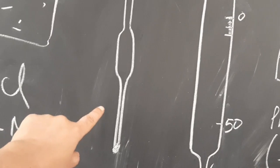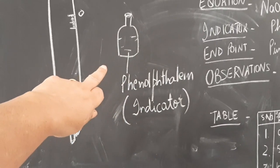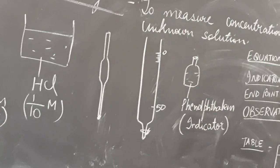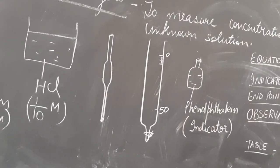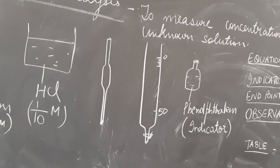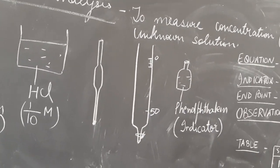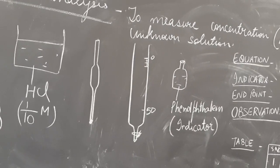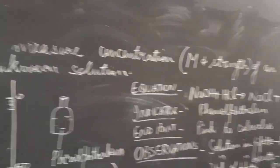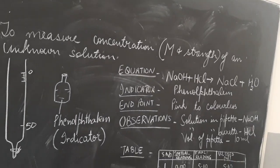The apparatus we are going to use includes a pipette and a burette. The indicator we are going to use is phenolphthalein. An indicator is basically a weak organic acid or a weak organic base which can change its color sharply with a change in pH — that is, as the solution changes from acidic to basic or basic to acidic, it sharply changes color. Such substances are called indicators.